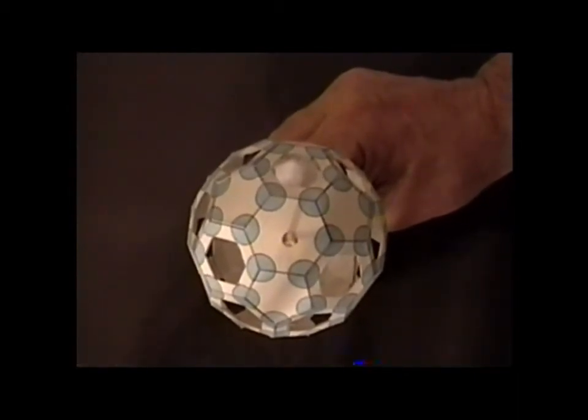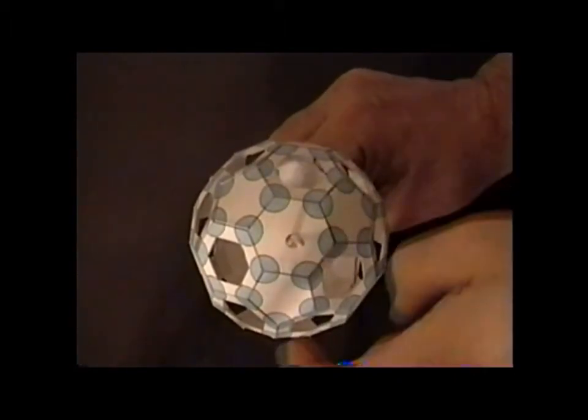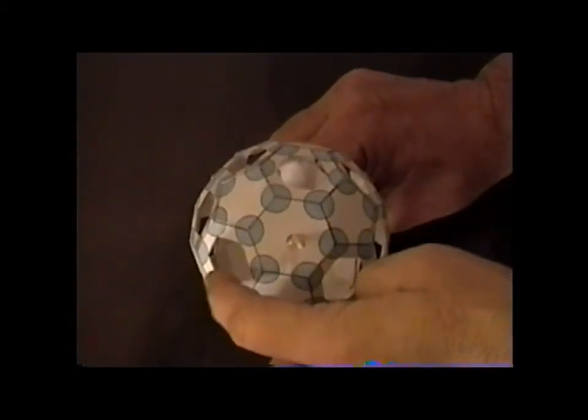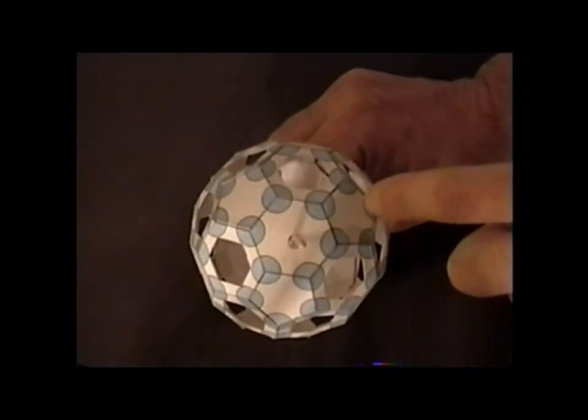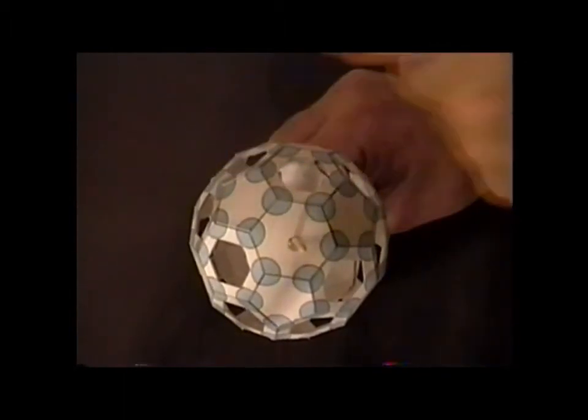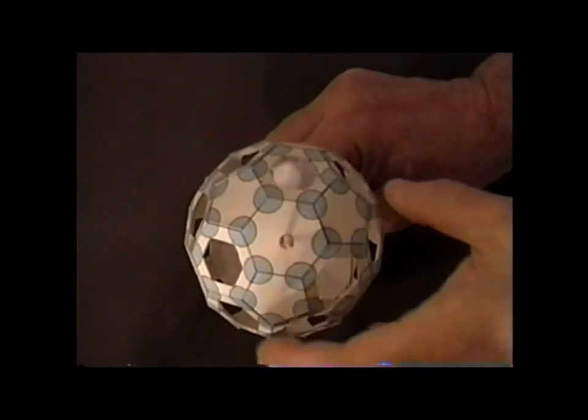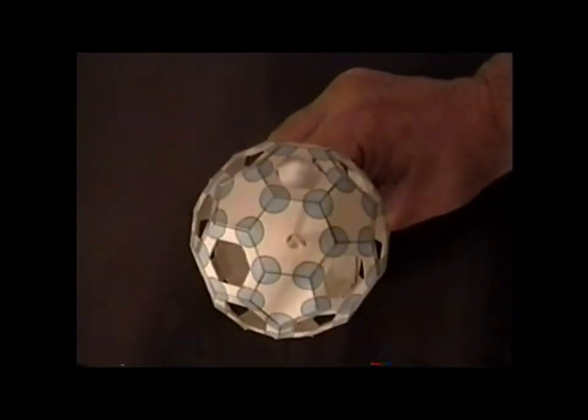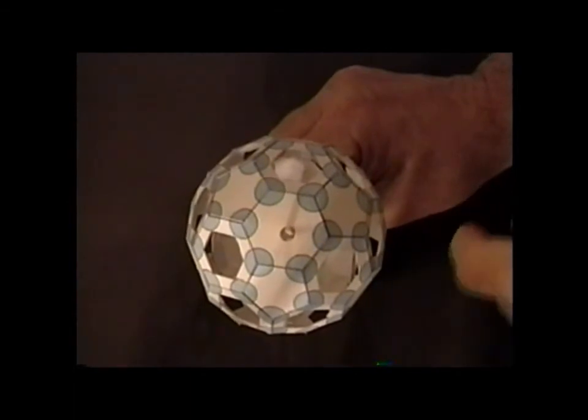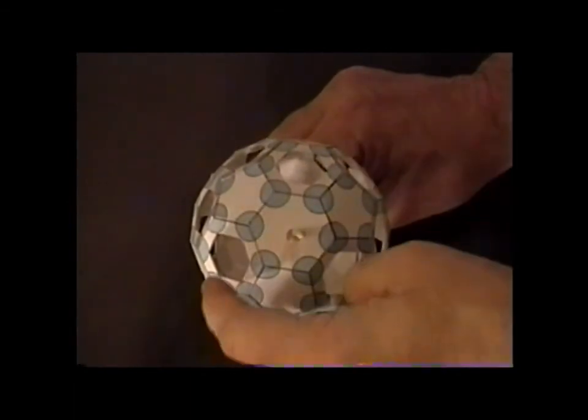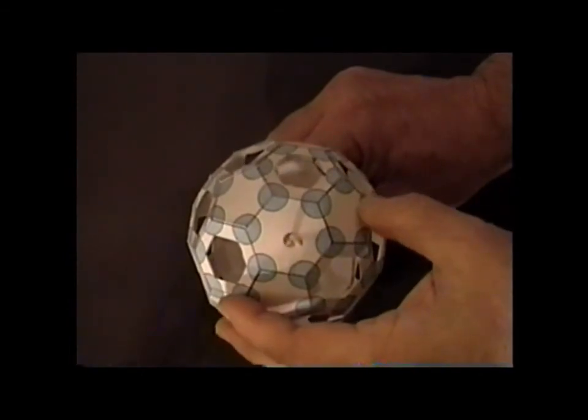A C3 axis, a C3 rotation, will take this hexagon into that hexagon, this hexagon into that hexagon, so that works. Also, a C3 would take this pentagon into this pentagon, this pentagon into that pentagon. So we'll see that we can see, looking down this axis, we look really carefully, we can kind of eventually see the C3 symmetry in that we have the three hexagons and the three pentagons. And we can verify it by doing a C3 rotation.